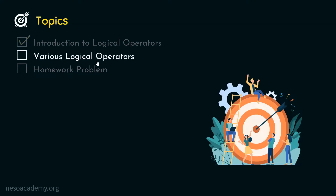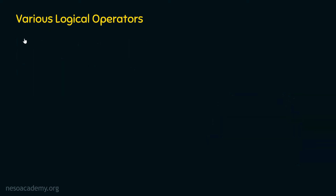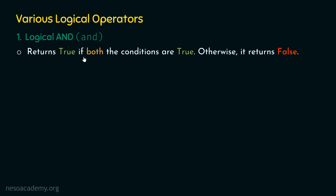Let's start with the first logical operator, which is logical AND, denoted by the 'and' symbol. It returns true if both the conditions are true; otherwise, it returns false. In order to understand how logical AND works, we need to consider one simple example.